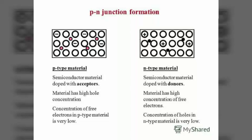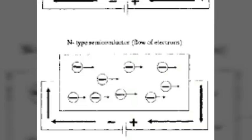Now let's discuss conductivity in N-type semiconductor. When a potential difference is applied across the N-type semiconductor, the free electrons in the crystal will be directed towards the positive terminal, constituting electric current. As the current flows through the crystal by free electrons, which are carriers of negative charge, this type of conductivity is called negative or N-type conductivity. It may be noted that conduction is just as in ordinary metals like copper.